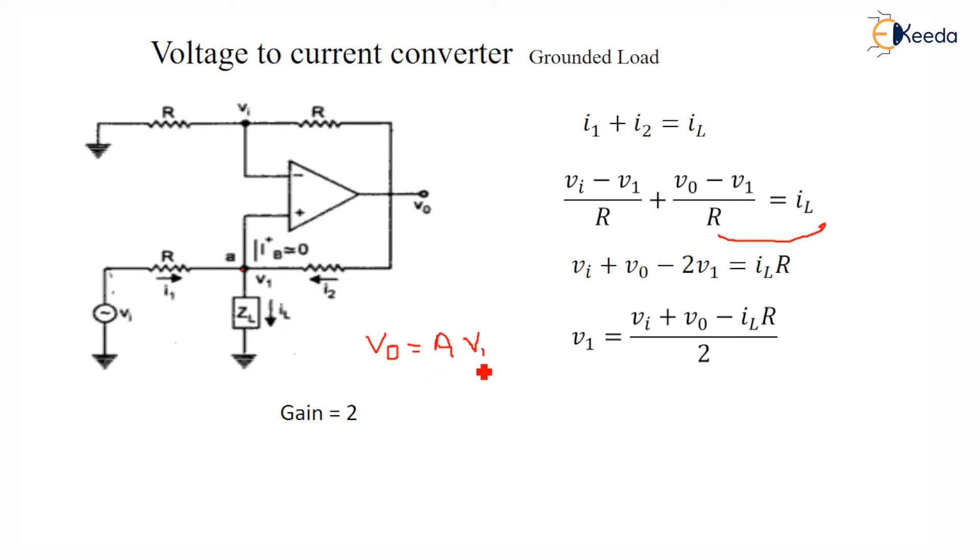So what I'll do is I'll substitute V1 as VI plus Vout minus IL R. And after substitution, this 2, 2 will get cancelled. And the VI, VI will get cancelled, Vout, Vout will get cancelled. So the IL, current through load, is equal to VI divided by R. So this is the grounded load.